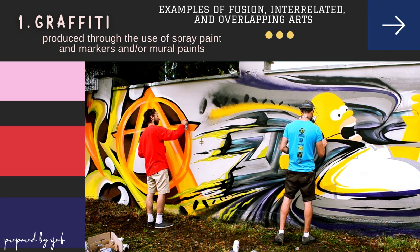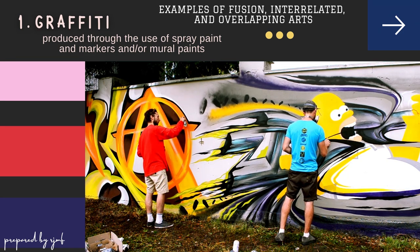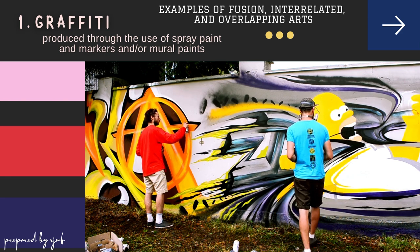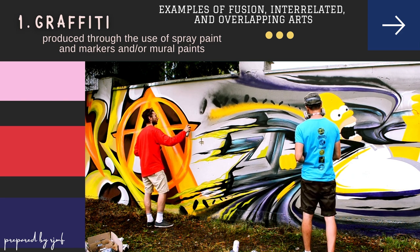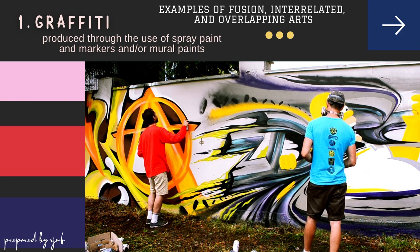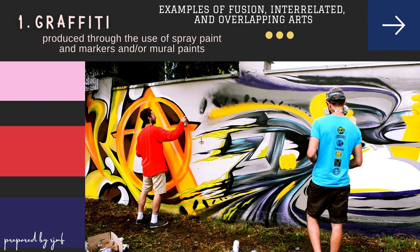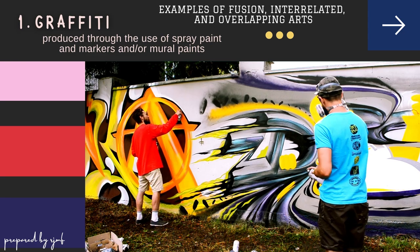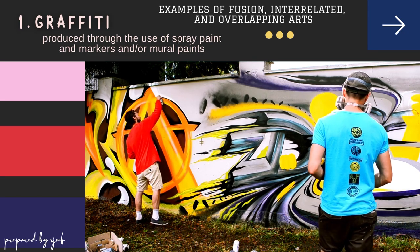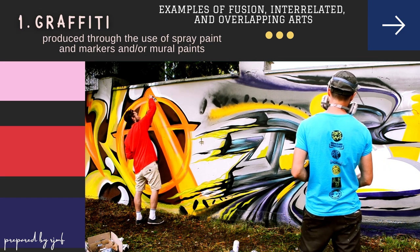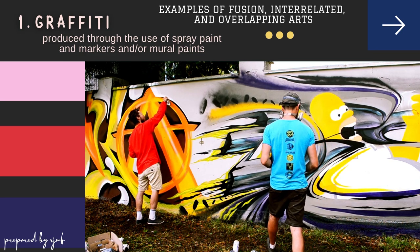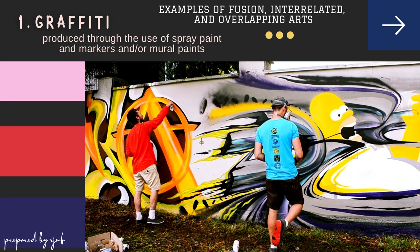The movement began amid an outbreak of urban street protests in the Atlantic around 1968. In Europe, it arose during the protests of students from Berlin and Paris. In America, it emerged in Philadelphia, then New York, where it flourished into a major form of urban contemporary art.